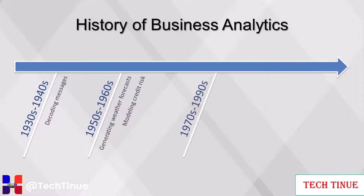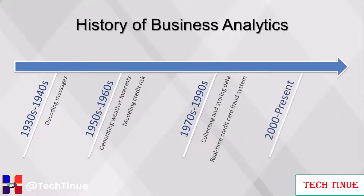Toward the end of the 20th century, as computing power became more affordable, more organizations began collecting and storing data. The types of analytical projects transitioned from being historical in nature to real-time. In 1992, the first real-time credit card fraud system was introduced. Then the first analytically-centric companies emerged. Companies such as Google use data to build their core product, while others such as Amazon use analytical techniques to earn market share from competitors. The rapid ascension of these tech companies has led to an arms race where all businesses have become committed to analytics.